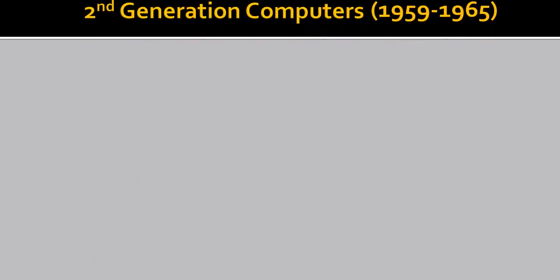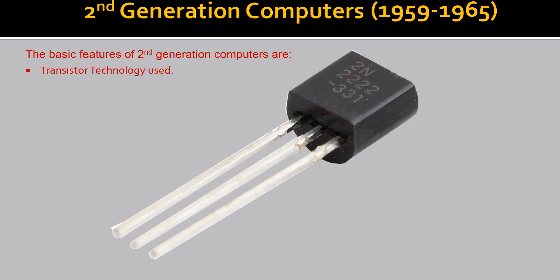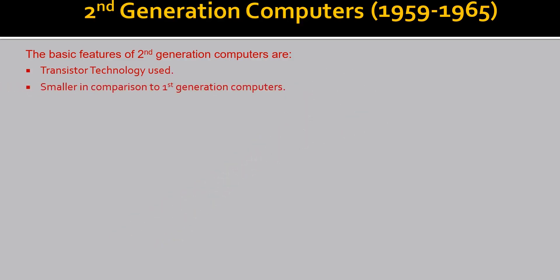Let us now see 2nd generation computers. These were used from 1959 to 1965. The basic features of 2nd generation computers were that they used transistor technology — as you can see in the picture, the technology changed. These were smaller in comparison with 1st generation computers, but still non-portable. They produced less heat, but there was still a need for an air conditioner.